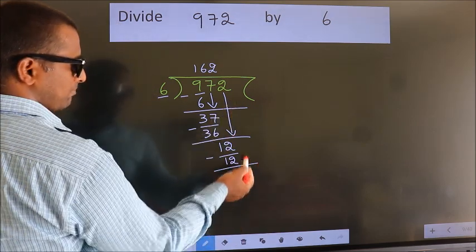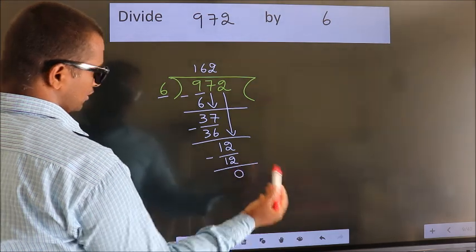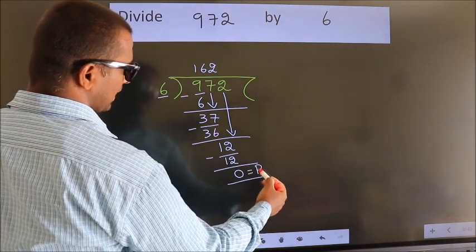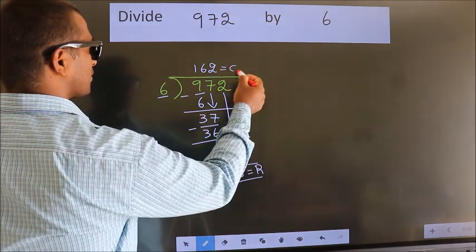No more numbers to bring it down. So we stop here. This is our remainder. This is our quotient.